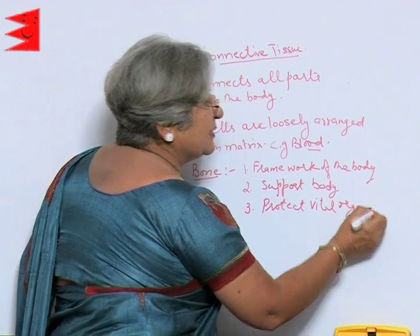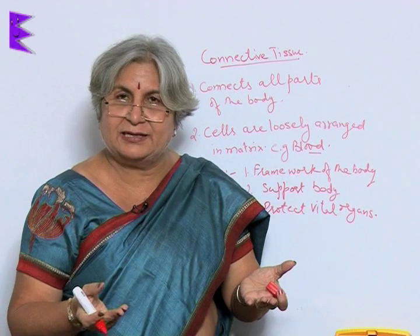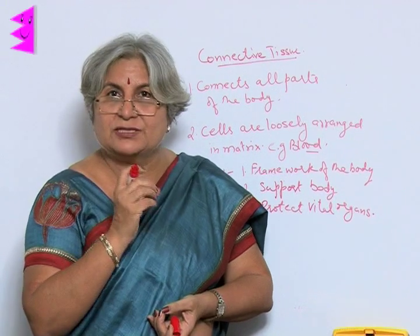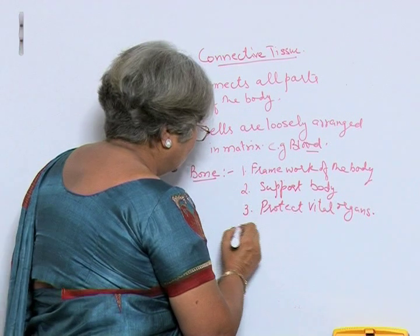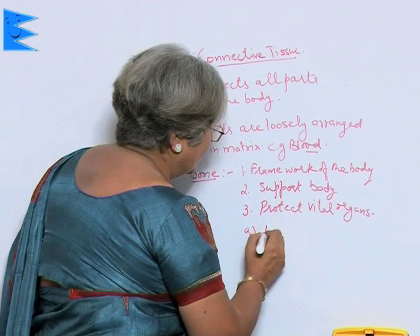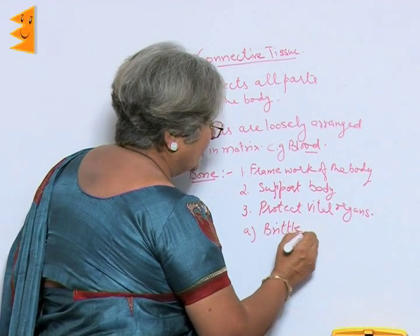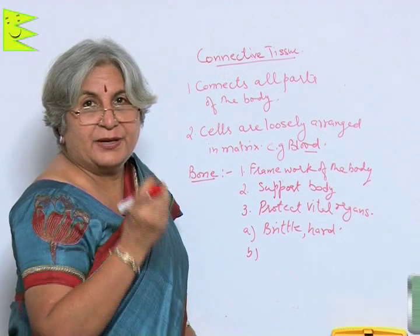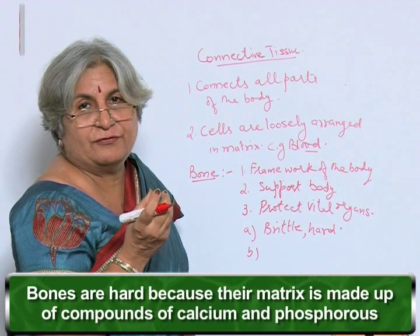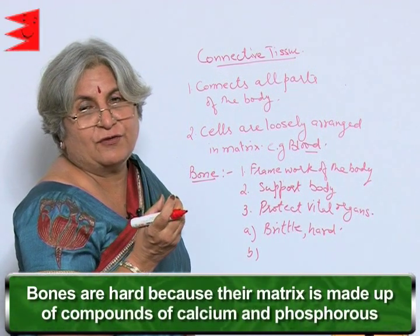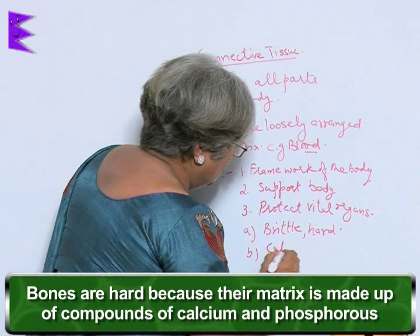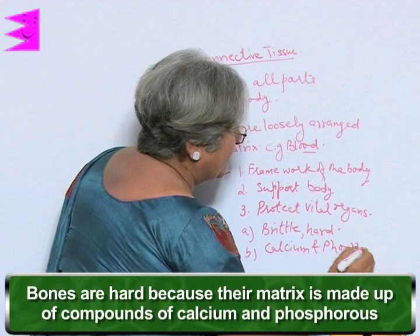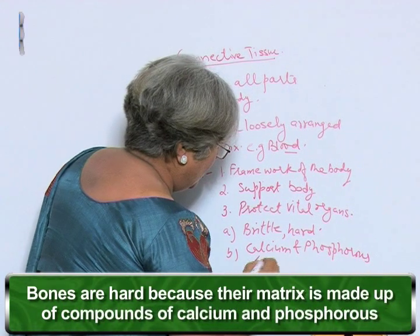Many times while playing or in any accident, bones get fractured. That means bones are brittle and hard. They are hard because their matrix is made up of compounds of calcium and phosphorous.